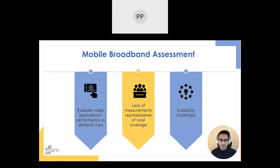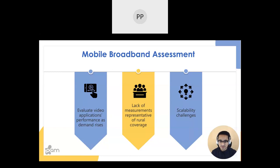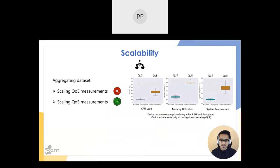With the COVID-19 pandemic, assessment of quality of experience for applications over mobile broadband has become urgent, as work from home and online schooling increase demand for video streaming. Communities without access to high-speed broadband, such as many rural communities, are particularly disadvantaged — more than 60 million people reside in rural regions in the US. Cellular deployment is often guided by economic demand, concentrating in urban areas and leaving sparsely populated areas underserved. There is also a lack of comprehensive, representative measurement datasets inclusive of rural demographics.